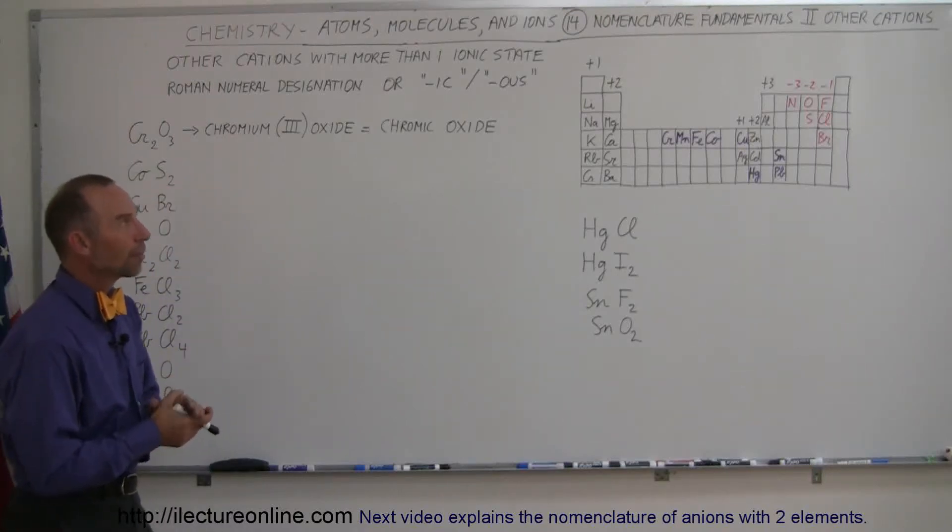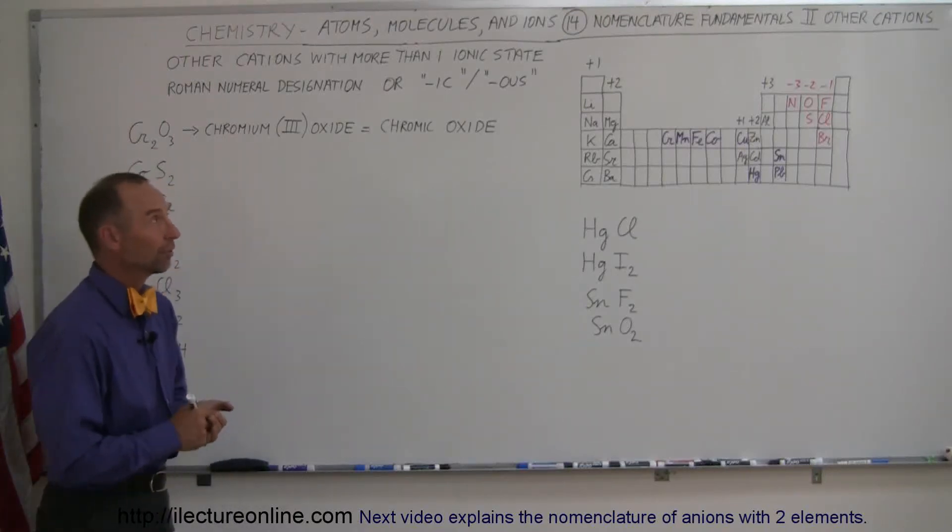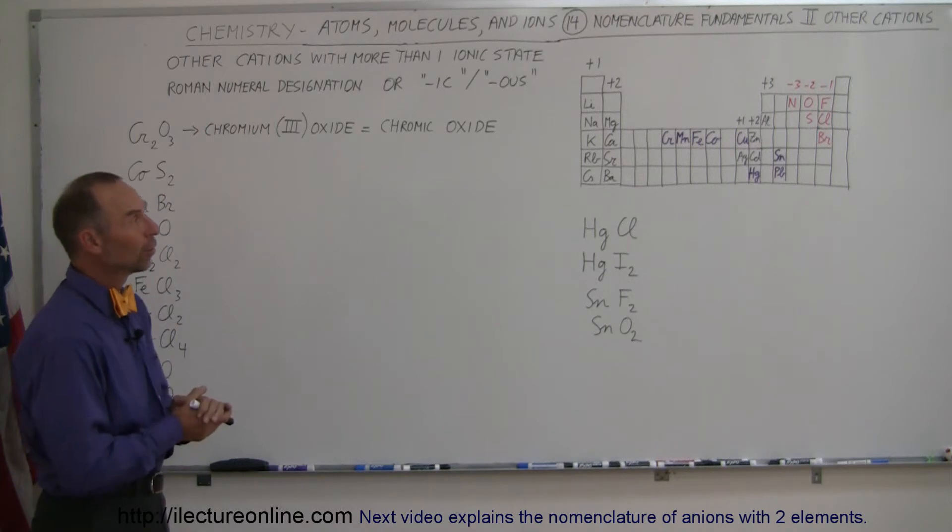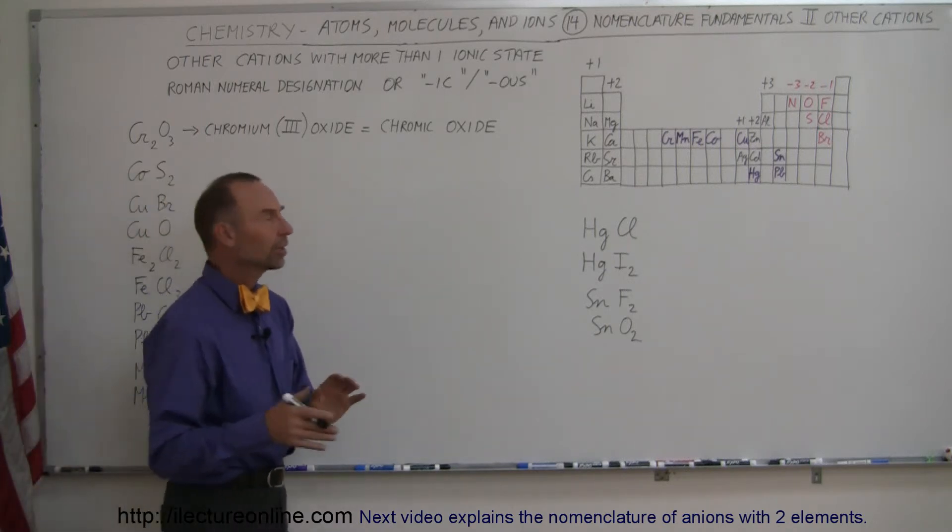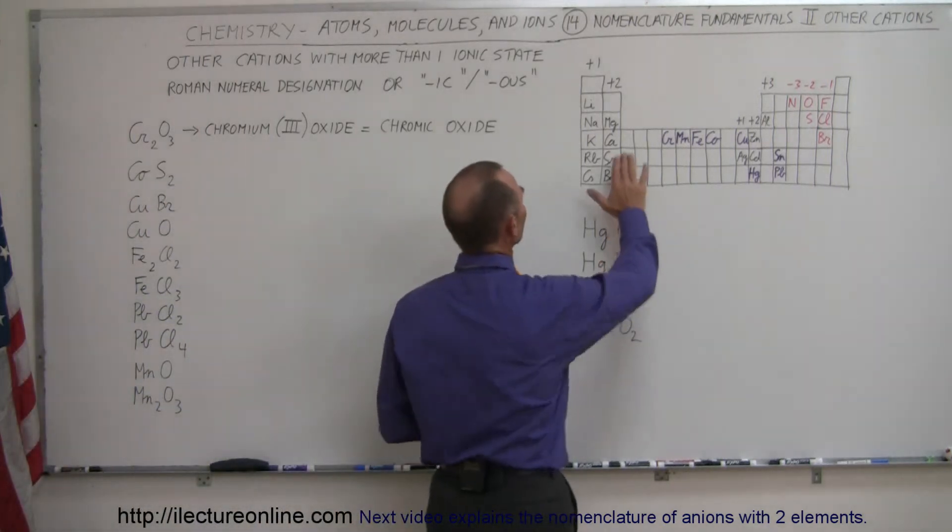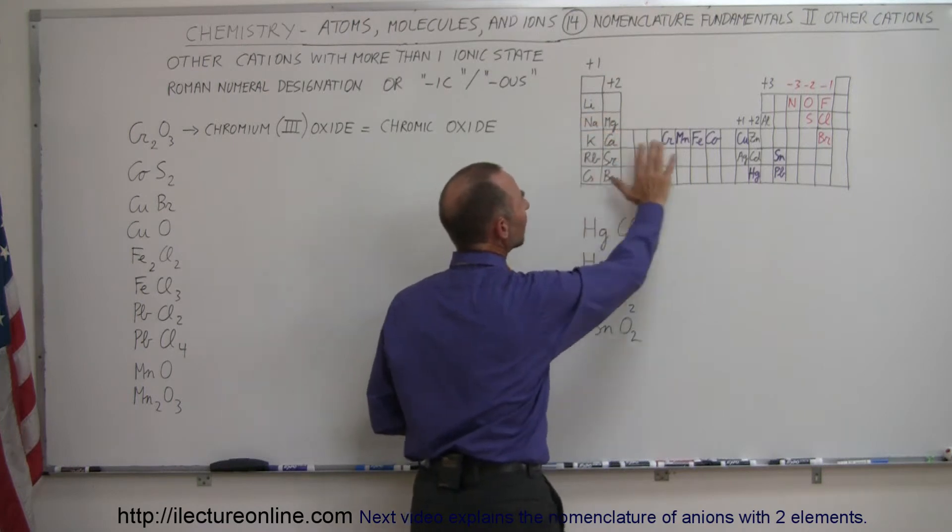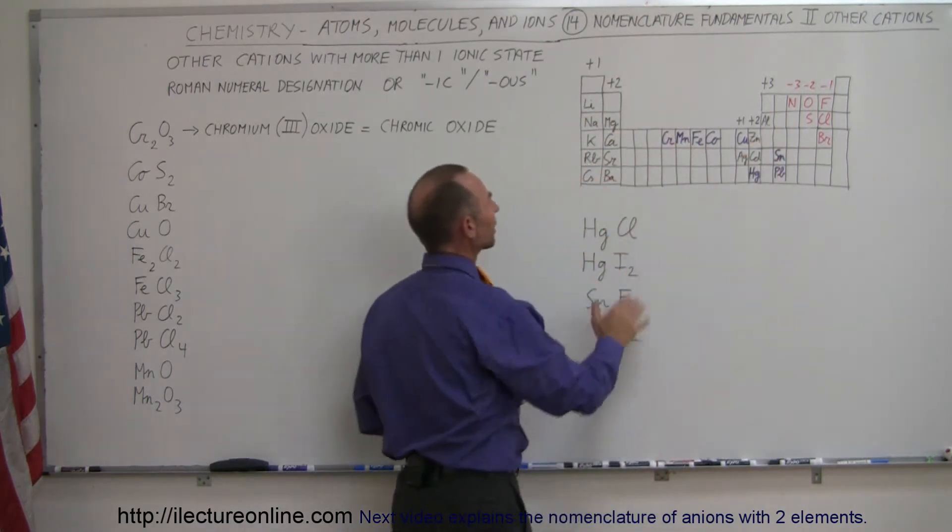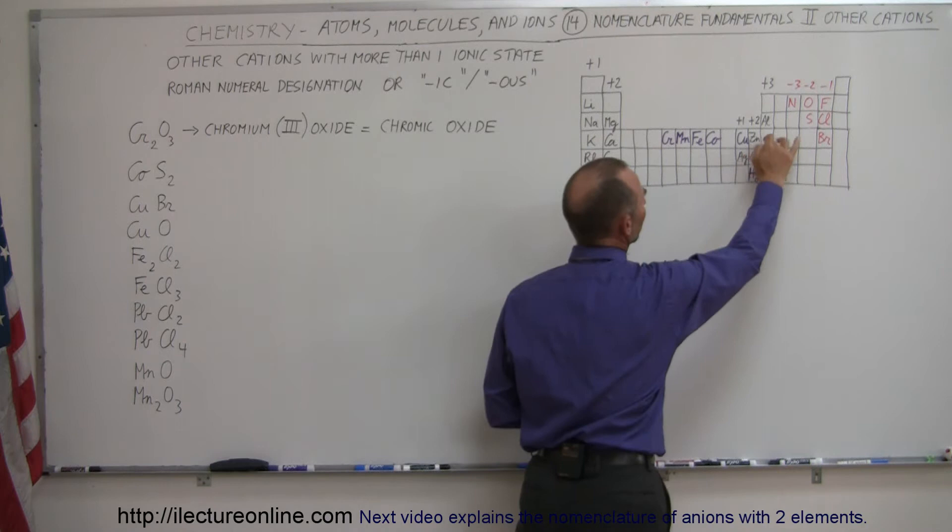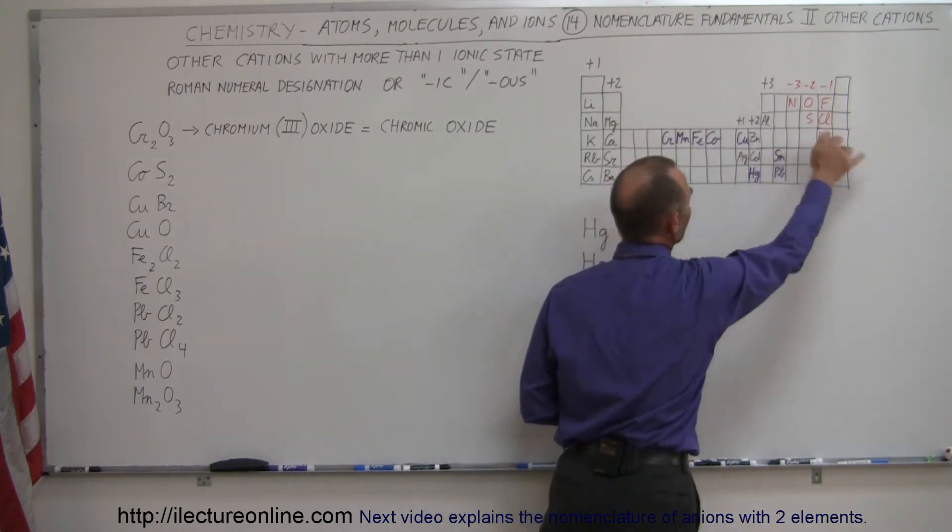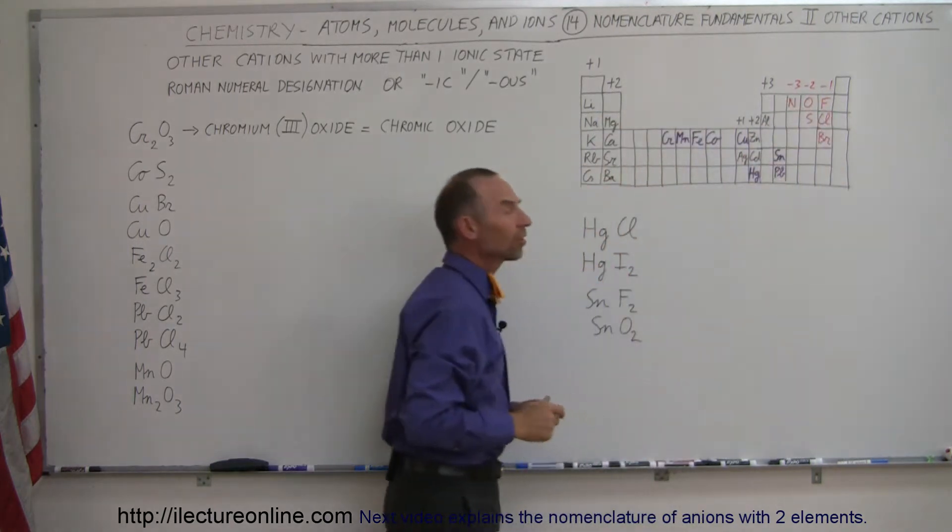Here's our second video on the nomenclature fundamentals in chemistry of how to name compounds. The first video was with compounds made out of ions that only have one ionic state, with cations and anions that have just one ionic state.